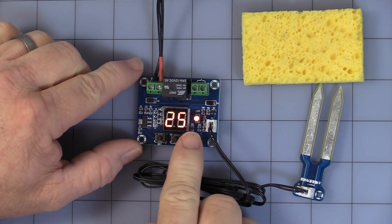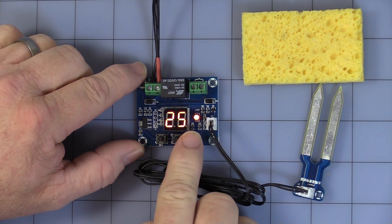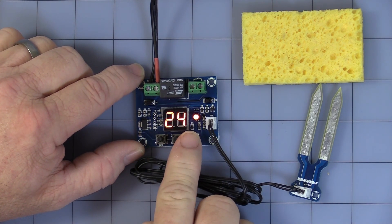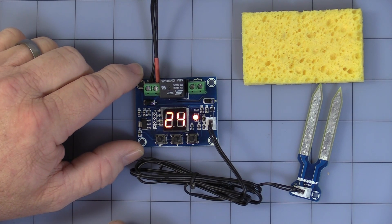Then you hit set again. This is the value, and you can turn it up and down with the plus or minus to whatever value you're looking for. Leave it for a few seconds and it will automatically go back to displaying the actual moisture.